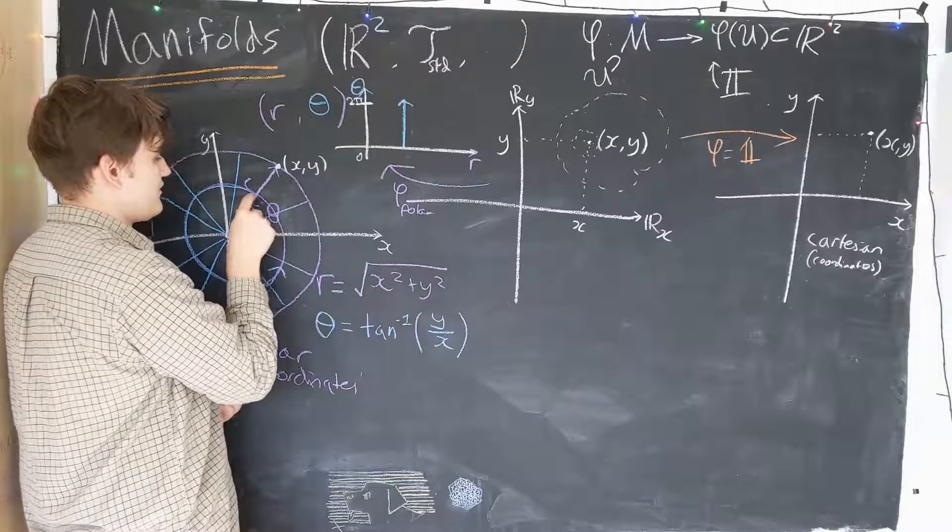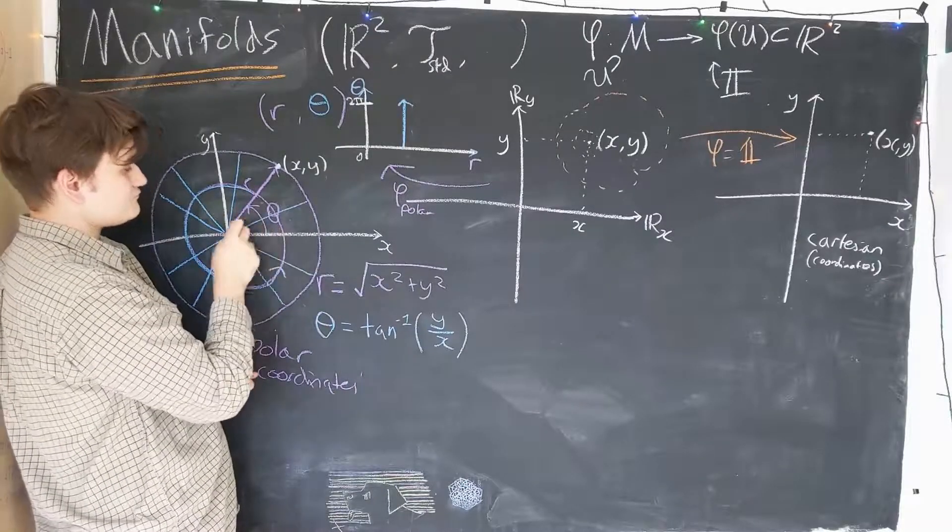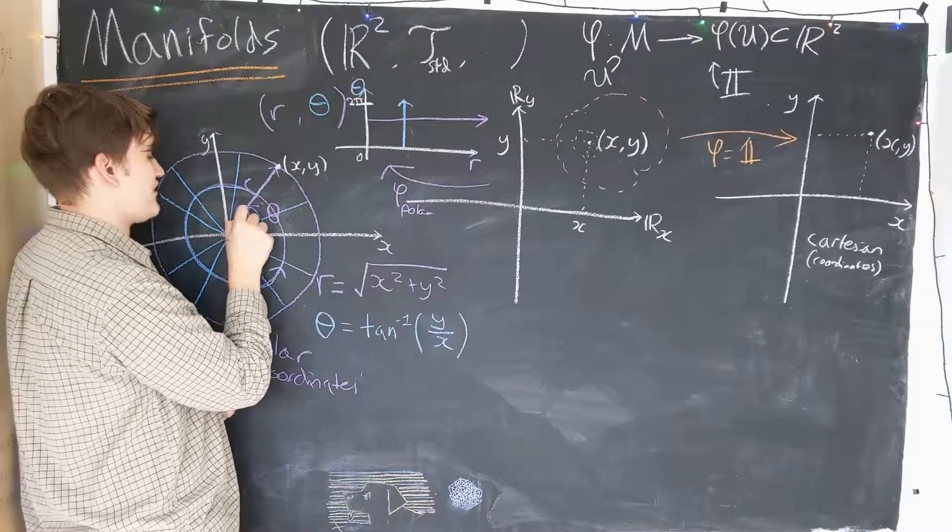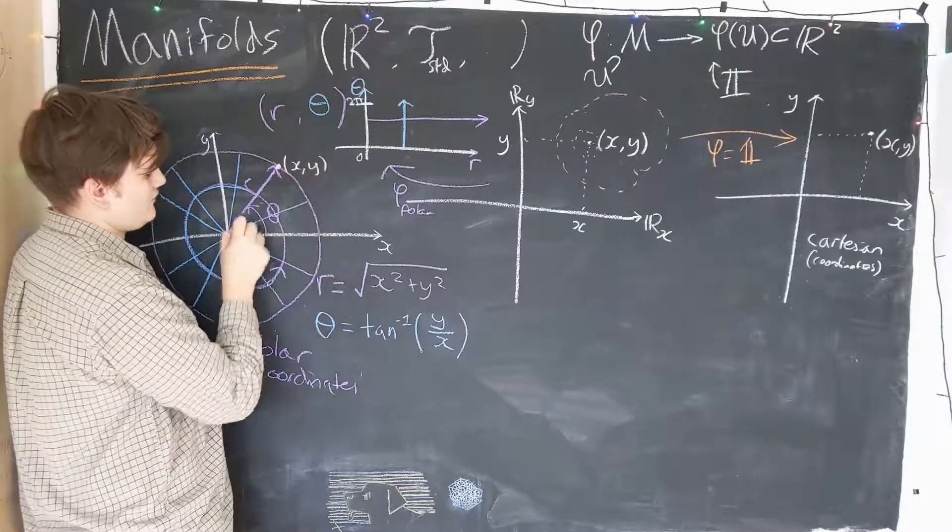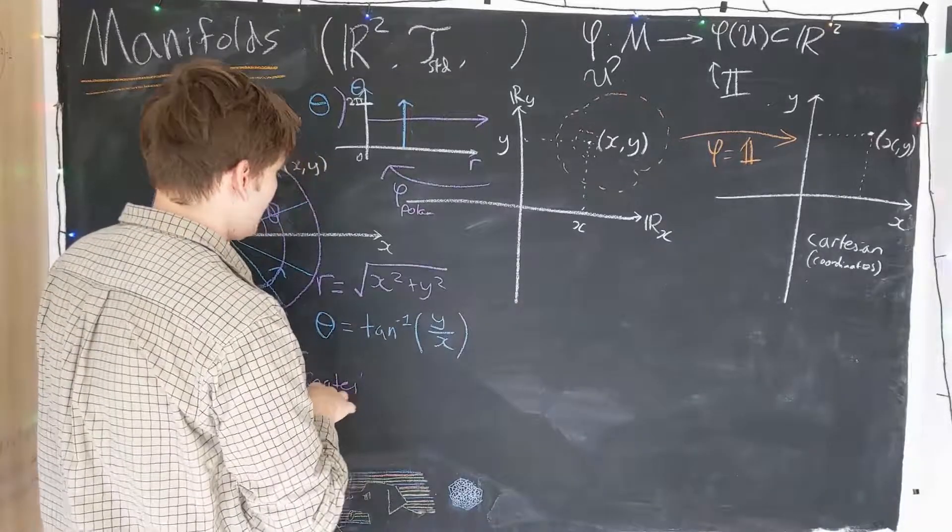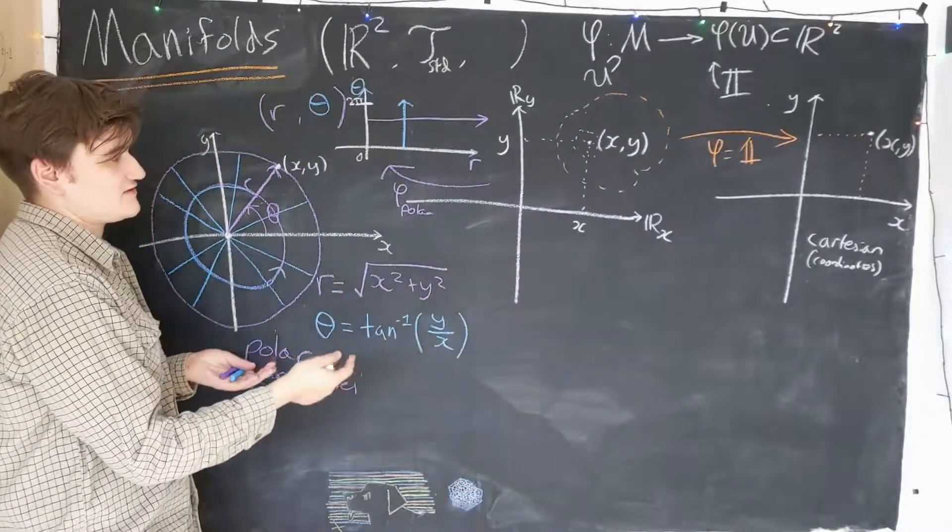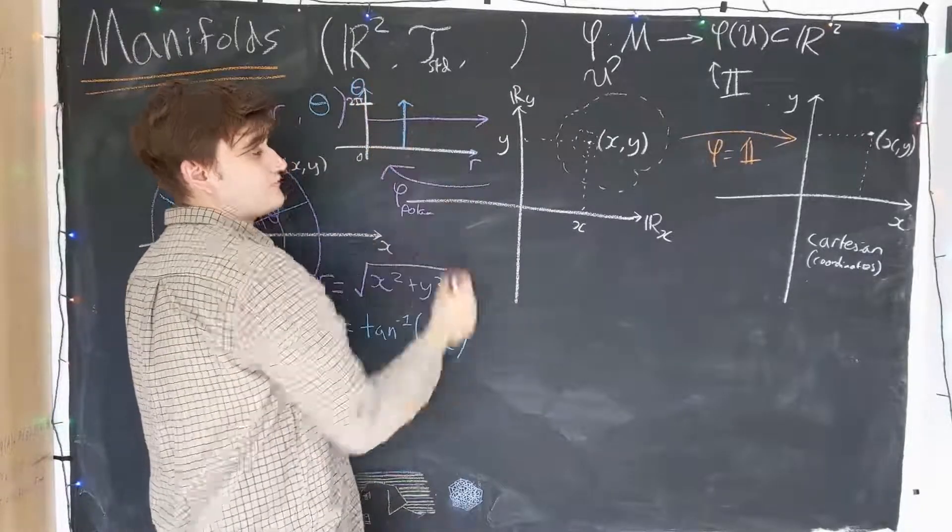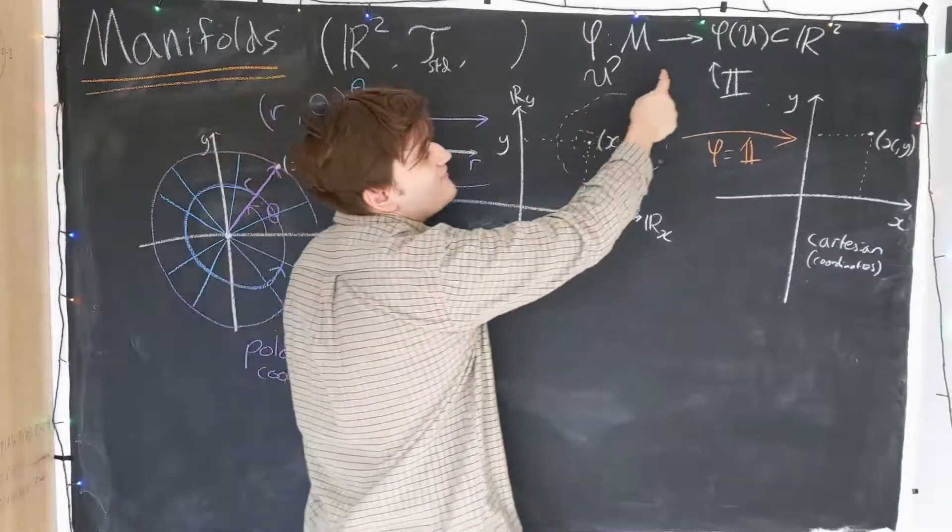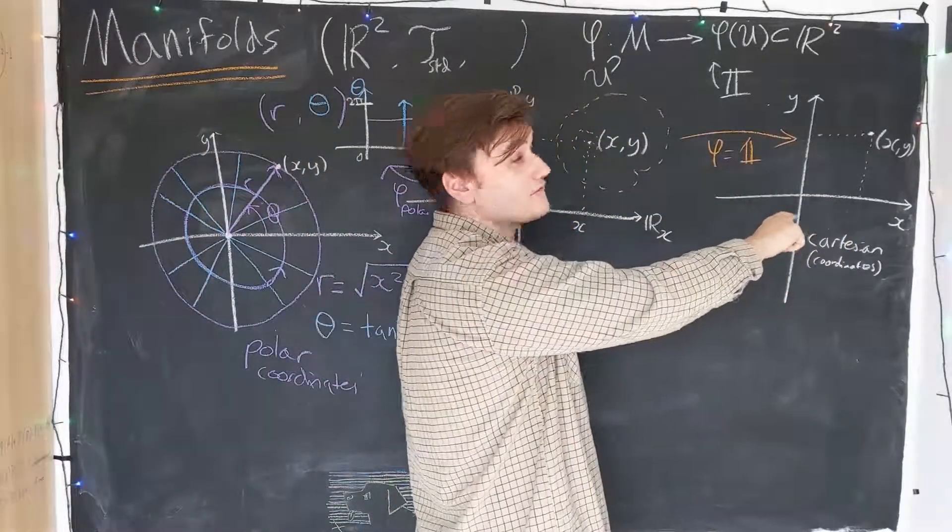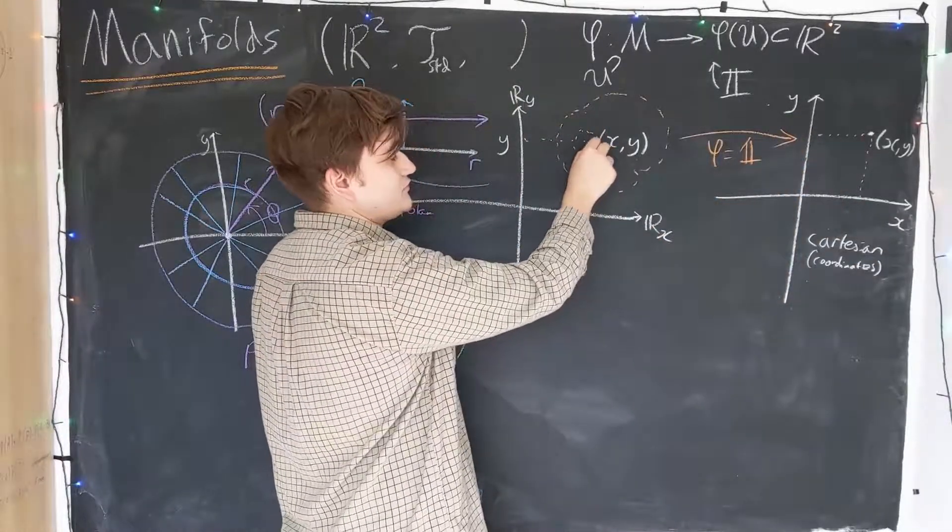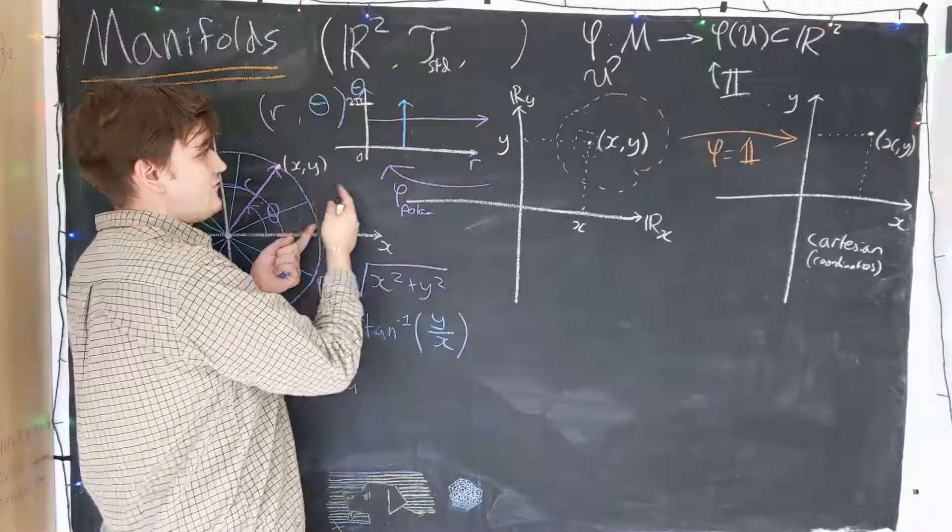And then similarly we could start at some theta value and then continuously vary the radius. And we would just travel along one of these radial paths, depending on where the theta value we started at. So this is a kind of simple example that illustrates how the base manifold R², since it's already R², we're just mapping into another subset of R². But the particular numbers we choose to represent the original points are different depending on the chart map.